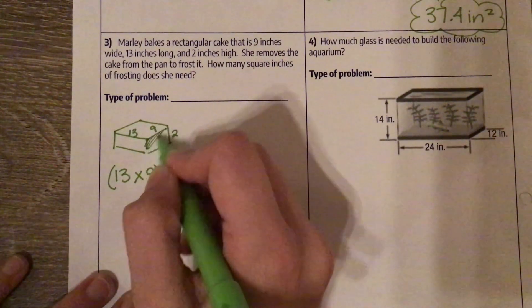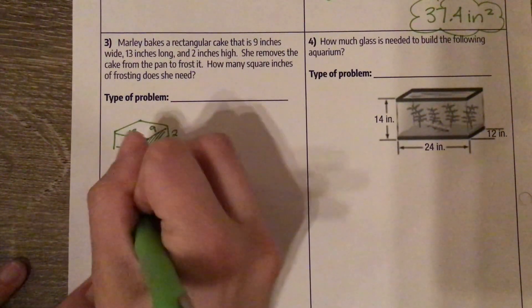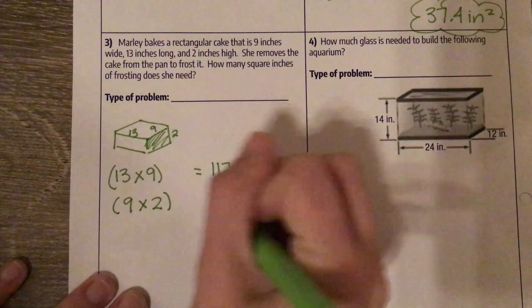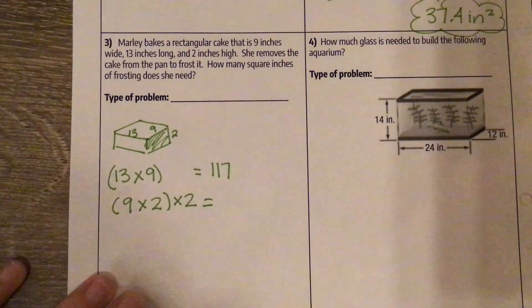Then we have this side here, which is 9 by 2. But there's two of them, so multiply that by 2.